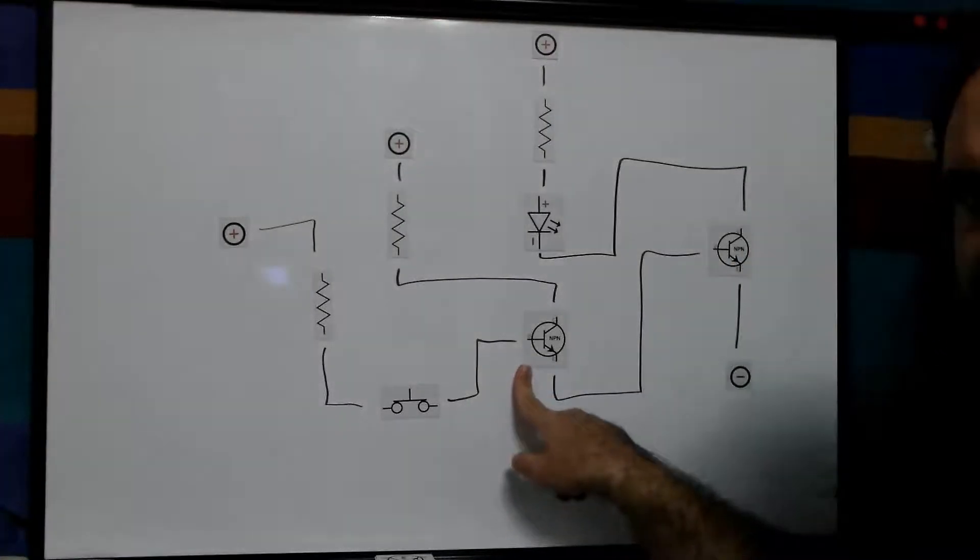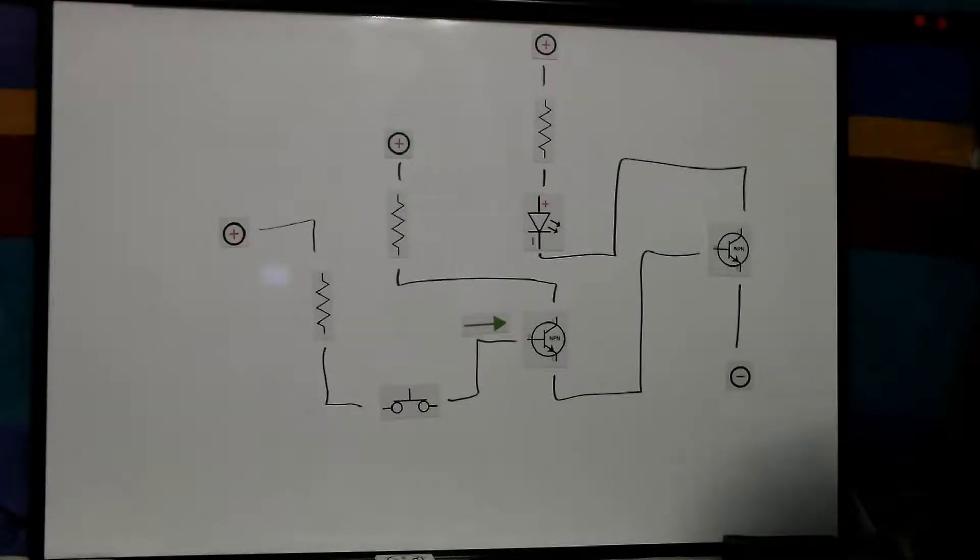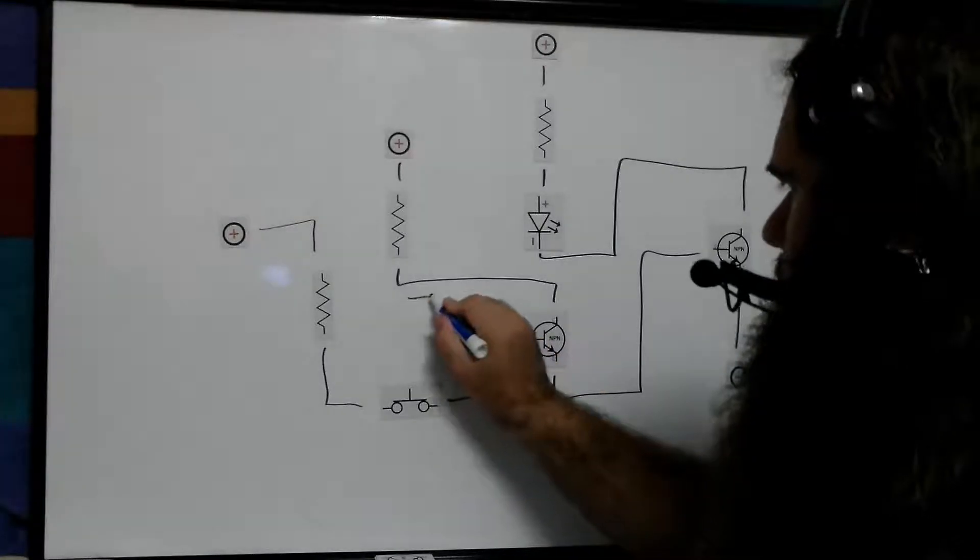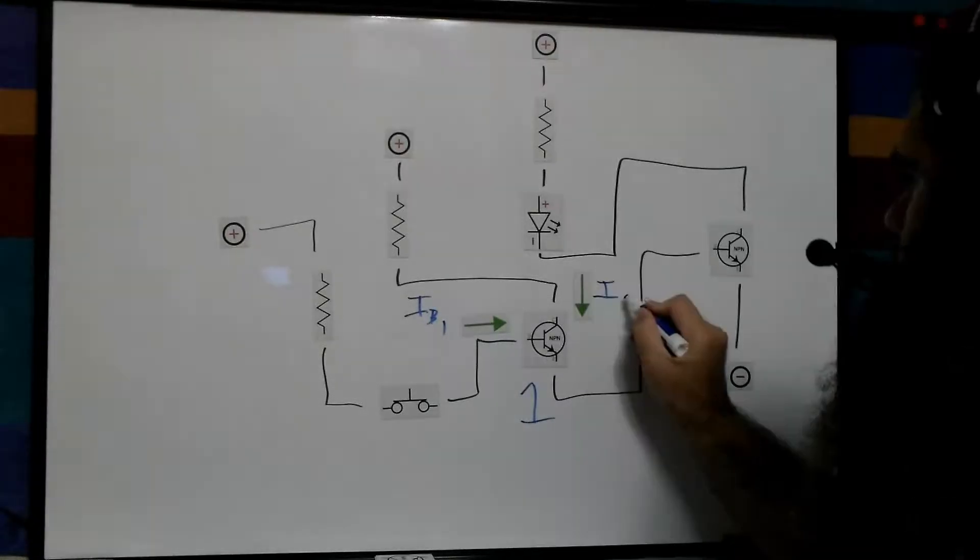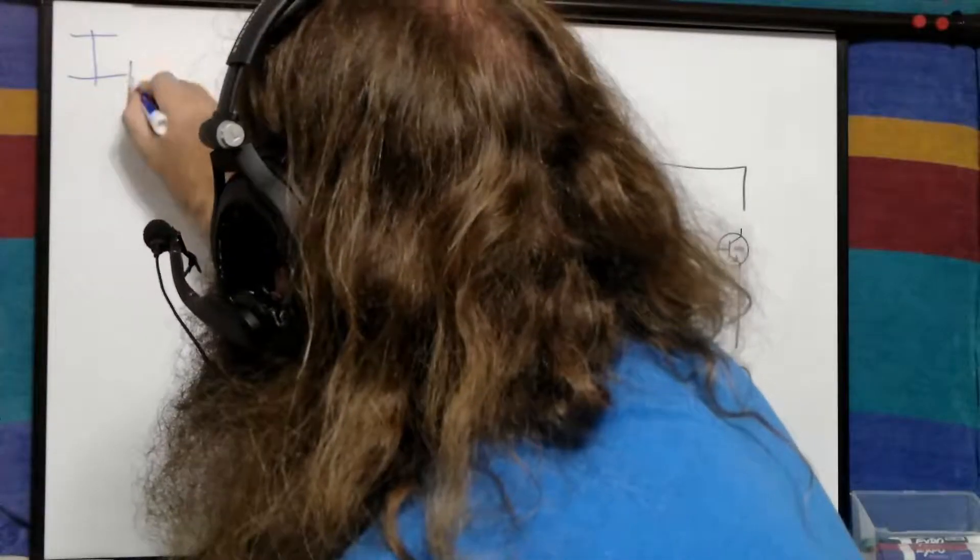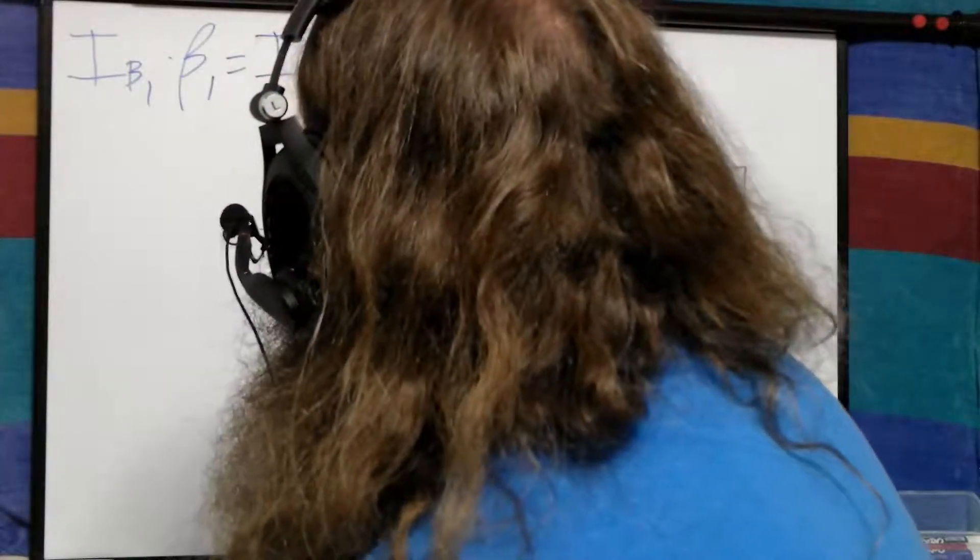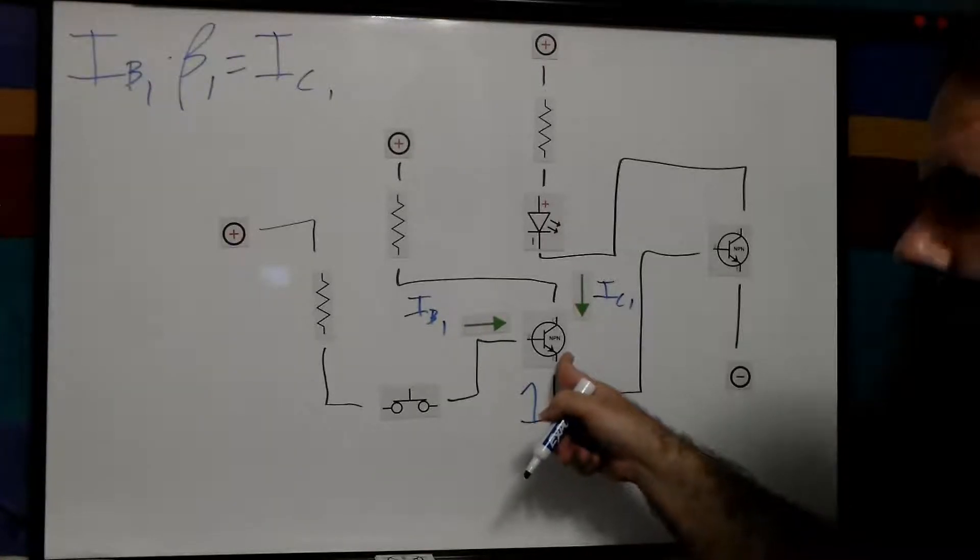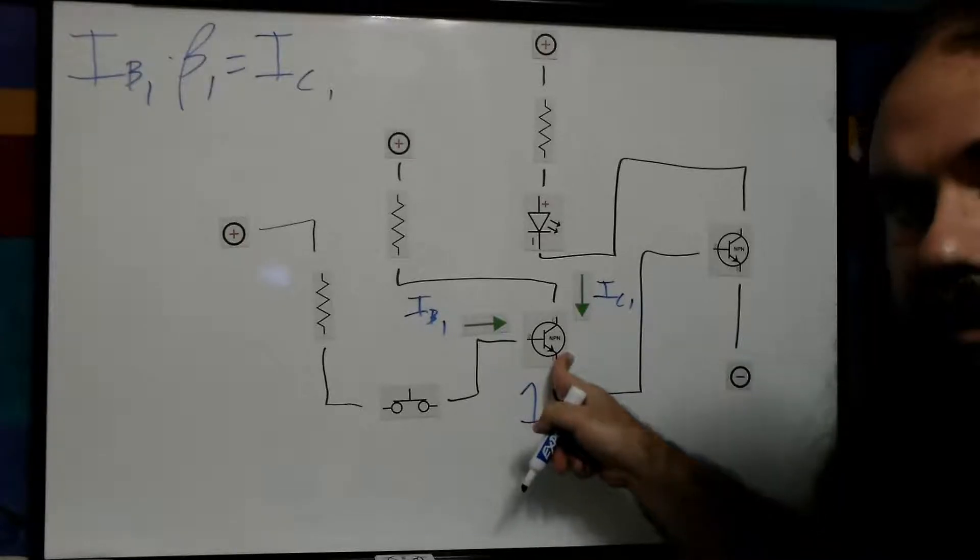So once you have forward-biased and turn this on, all that matters is the current through the base-to-emitter junction. Let's call this transistor 1. So this is current of base 1. And then we have the current through collector 1. And then we have our math. The current through base 1 times beta 1 equals the current through collector 1. Beta 1, the beta of this transistor, is just a value that is determined by its construction. It's in the spec sheet.